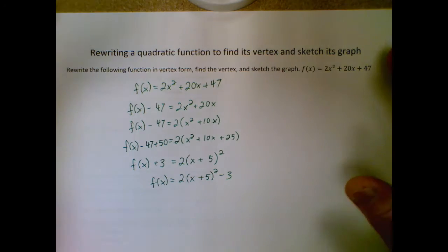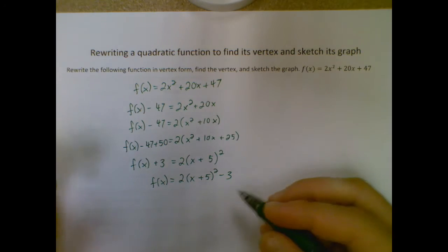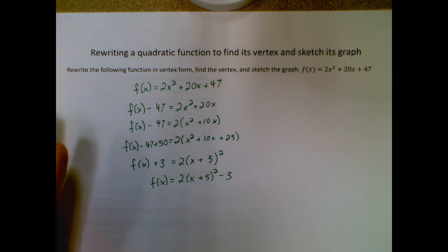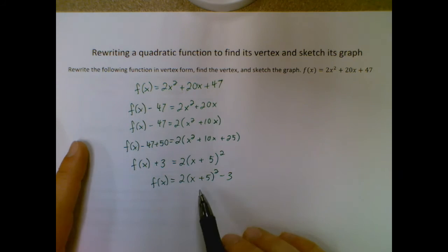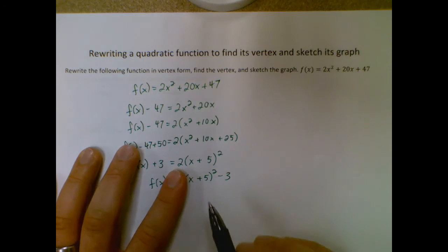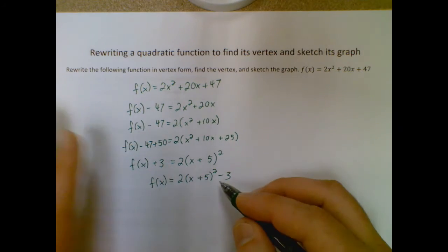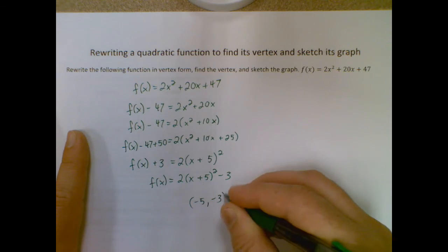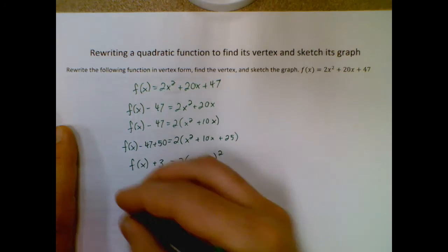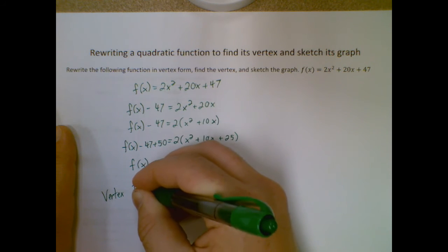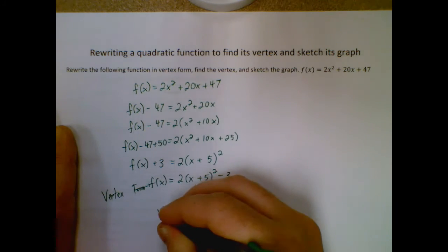I got through the complete the square process. The reason we do that is because it makes these next two parts quite simple. What I need to do is pull out my vertex. The a value doesn't matter here. I'm just looking at these. Remember, we have to flip the sign of this one. So my vertex is at negative 5. And this one stays the way it is. So it's at negative 5, negative 3. This is vertex form. This is my vertex.